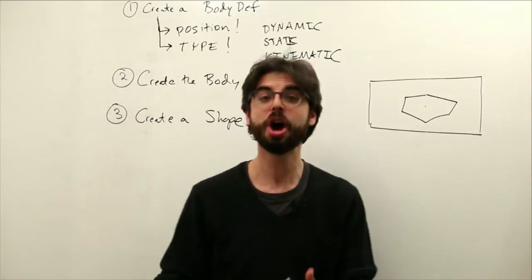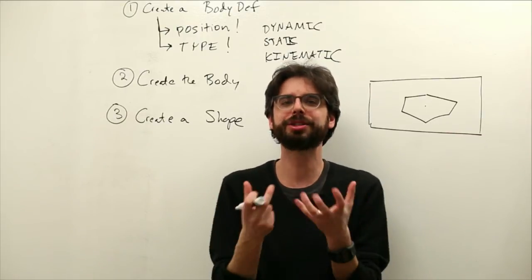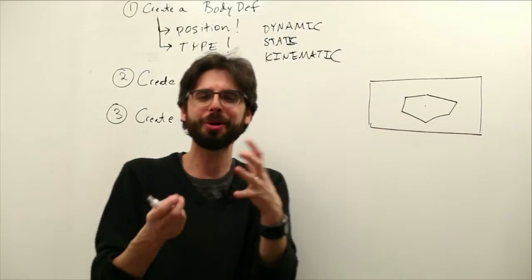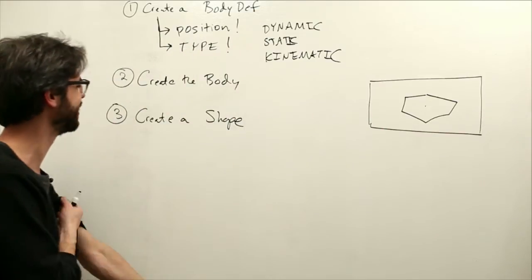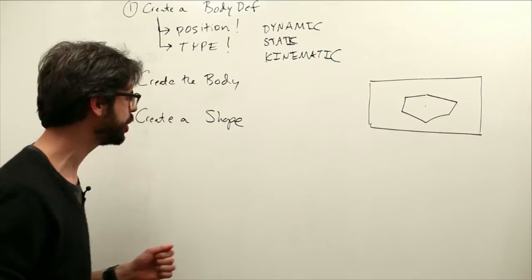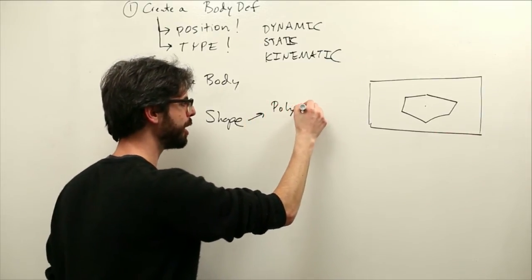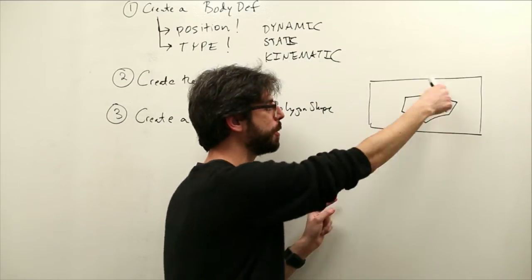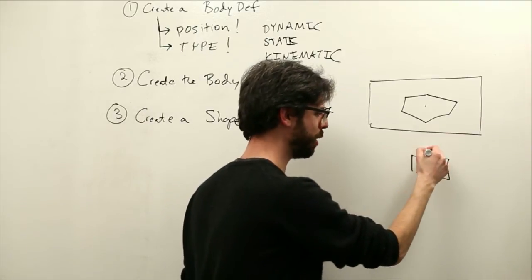We can give it a shape. So the next thing we need to do is create a shape. The shape is what is going to define what that body looks like, how it responds to collisions, what is the form that it's actually taking. The body is just this sort of empty soul and the shape is the form that is attached to that soul, if that makes any sense. So when we create the shape, we can create a number of different kinds of shapes. Just some examples are polygon shape, that's what we're going to start with. A polygon shape can be any arbitrary polygon with any arbitrary set of vertices. Or it can be something like a box with a width and a height.